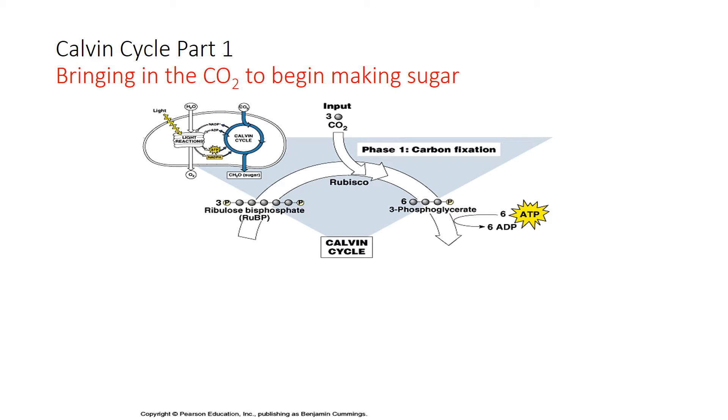Alright, so let's see. Let's start at the beginning. Remember, the Calvin cycle occurs after the light-dependent reaction. What were the products of the light-dependent reaction?